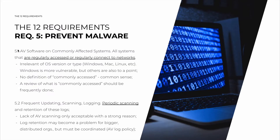Starting with 5.1: you need to have antivirus software on commonly affected systems. The definition of 'commonly affected' can vary. These are systems that are regularly accessed or that regularly connect to networks and naturally deal with cardholder data. But depending on how you interpret it, you can include more or fewer machines. Note that this is irrelevant of the operating system version or type. Naturally, Windows servers are more vulnerable, but Mac and Linux are also vulnerable, even if a lot less. So you always need antivirus.